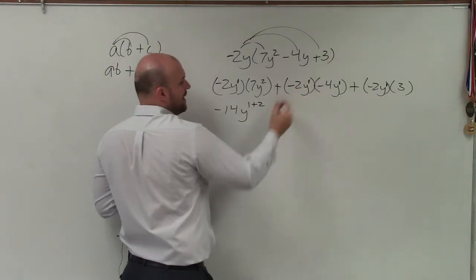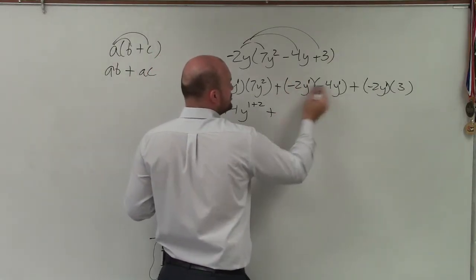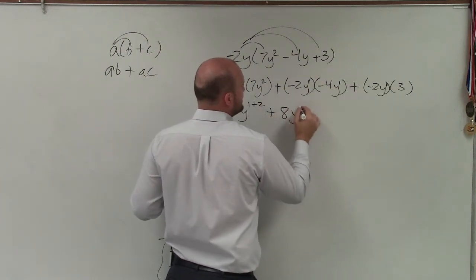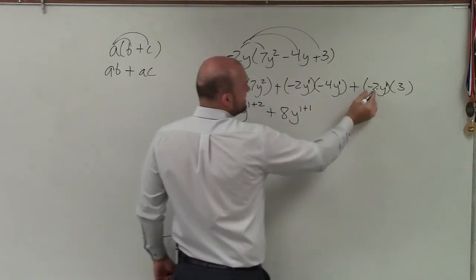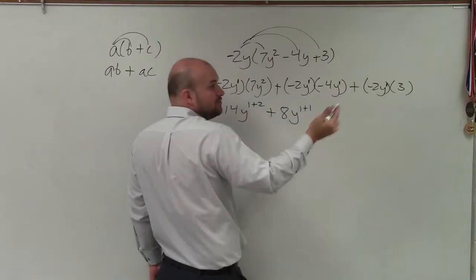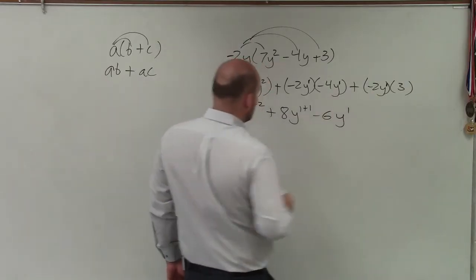Now, this one's going to be a negative times a negative, which would be positive. So it would be a positive 2 times 4 is 8y to the 1 plus 1. And then this is negative 2 times positive 3, which would be a negative 6, to y to the 1.